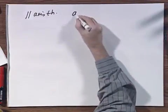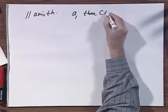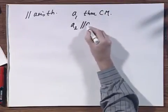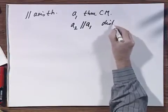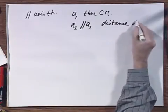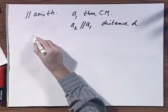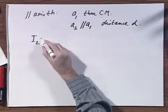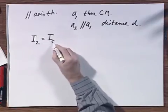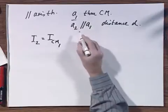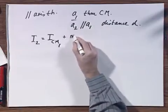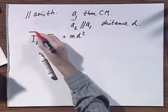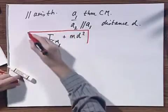If I have an axis A1 through the center of mass, and I have an axis A2 which is parallel to A1, but it is at a distance D, then I2, moment of inertia relative to this axis, equals I through the center of mass, which in this case is axis one, plus M D squared. Comes in extremely handy, and today you're going to need it.